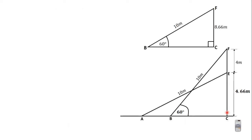To find BC, I'm going to draw a simple right angle triangle for triangle BFC. In triangle BFC, the angle at B is 60 degrees, and there is a right angle at C. From B to F is 10 meters, and from F to C is 4 meters plus 4.66 meters, which gives us FC = 8.66 meters.